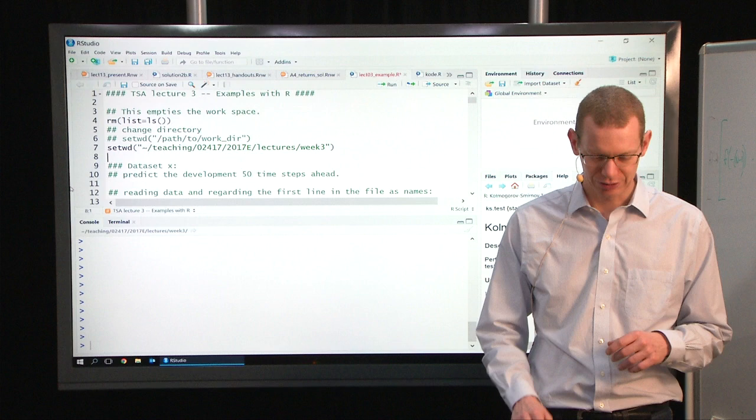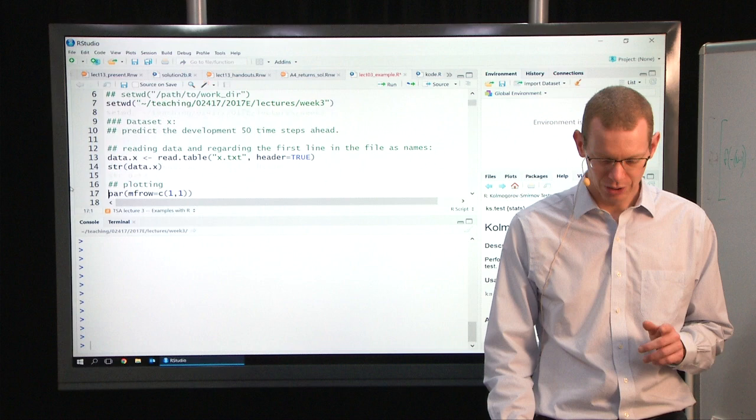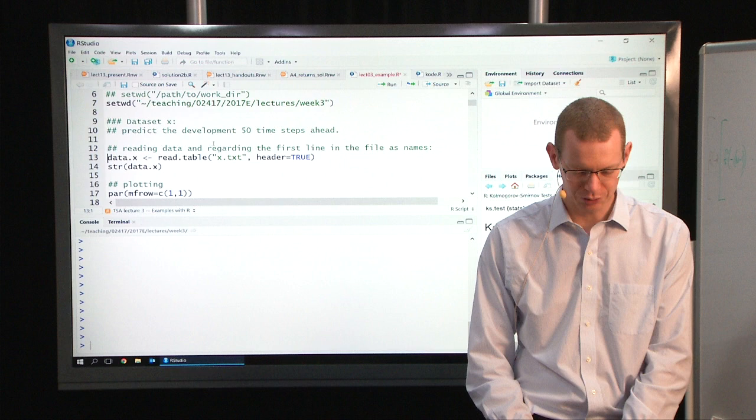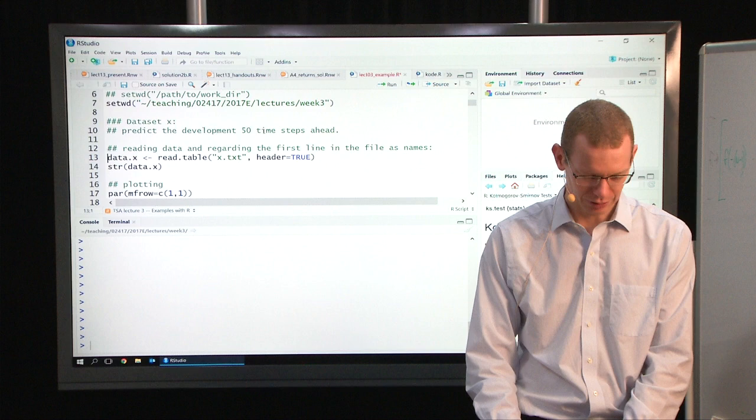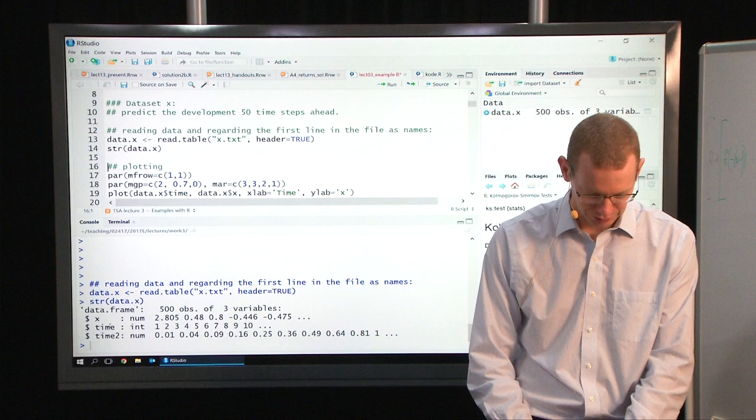I want to give you an example showing you some different things, and I have made a small script to do this. We have some data here, we'll read it, and what we are asked to do is to predict 50 time steps ahead. What are we expecting to see? Let's read the data and look at what we got.